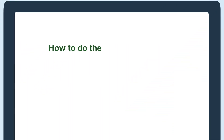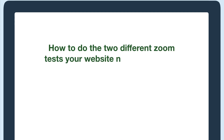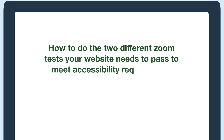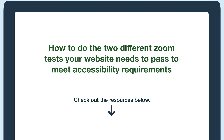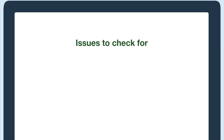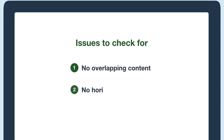Hi everyone. In this video you'll learn how to do the two different zoom tests your website needs to pass to meet accessibility requirements. For more information on manual accessibility testing, check out the resources below. In both zoom tests you want to make sure there is no overlapping content and there isn't any horizontal scrolling, so the content should zoom and still be readable.